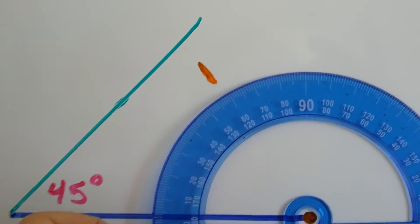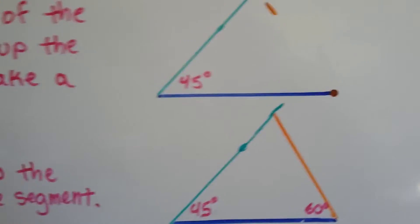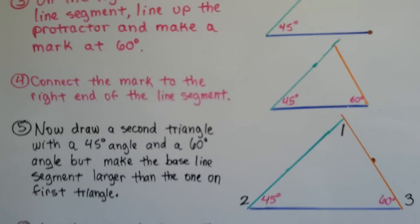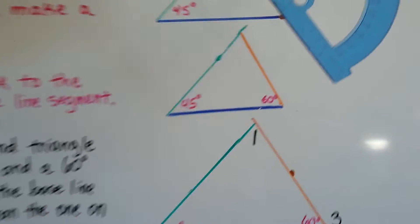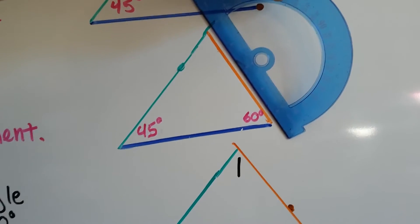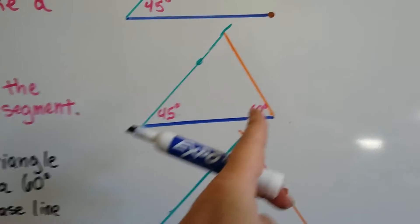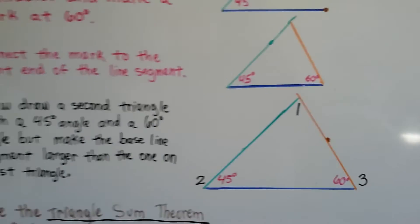I put an orange mark right above the 60 degrees. So now all I have to do is connect the mark to the end of the right side of that line segment. All I have to do is go like this and draw the line. Now I've got a 45-degree angle and a 60-degree angle for a triangle.